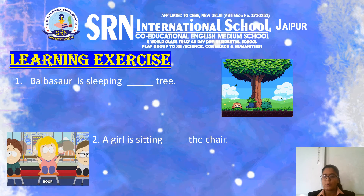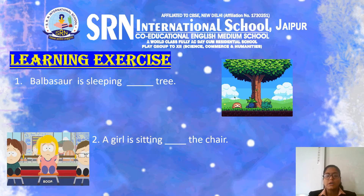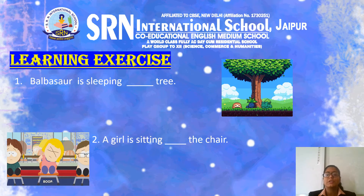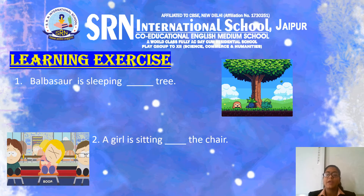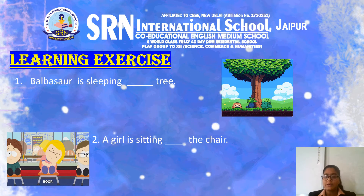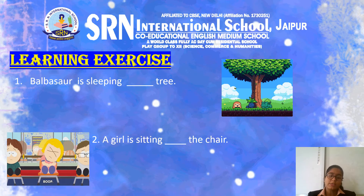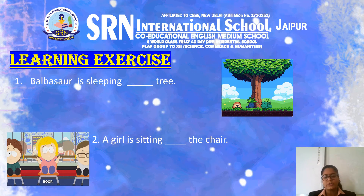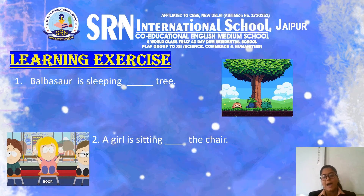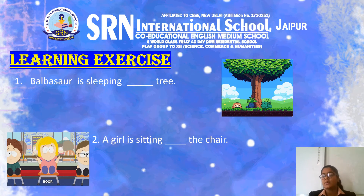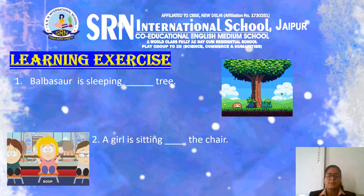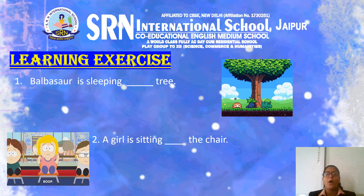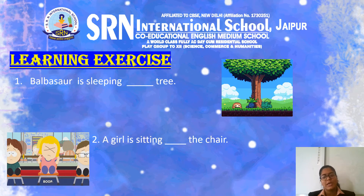Next, a girl is sitting ___ the chair. We have to find the girl in this picture. In this picture, the girl is sitting on the chair. It also answers where the girl is sitting. So, the answer is: a girl is sitting on the chair.